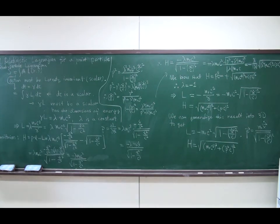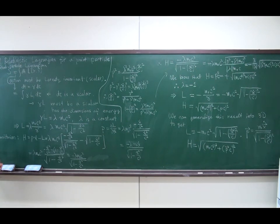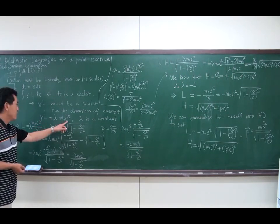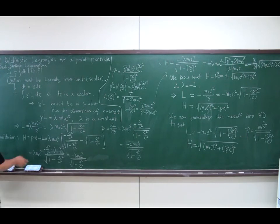If there is no other information except for the mass of the particle, then gamma·L should be proportional to m₀c², because that is the only Lorentz scalar available. So gamma·L must be a scalar with the dimension of energy, and we know m₀c² has that physical dimension. Therefore gamma·L equals lambda·m₀c², where lambda is an undetermined multiplier. We will determine lambda by requiring it to reproduce the known energy of the particle.